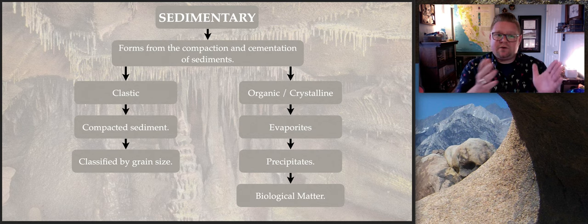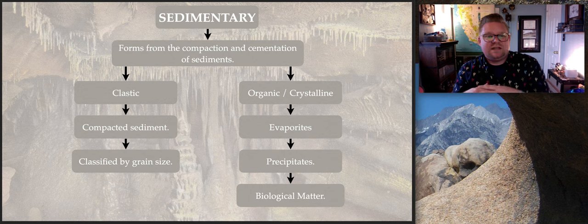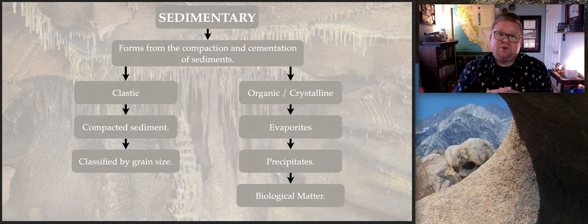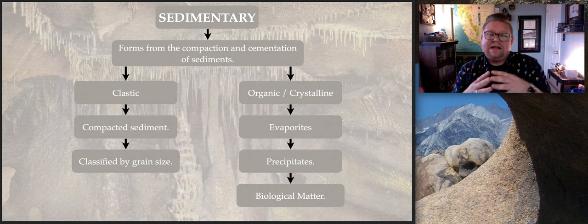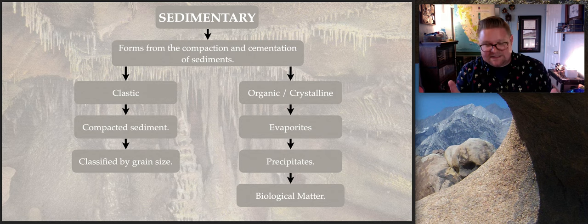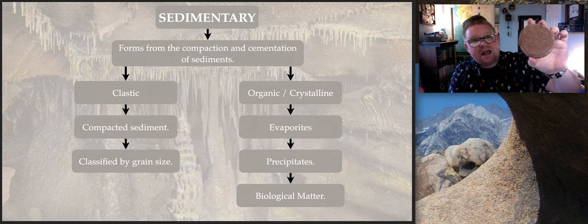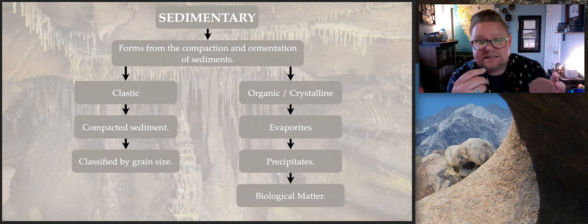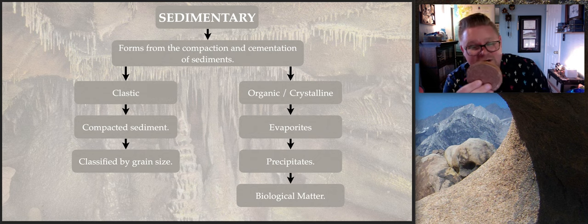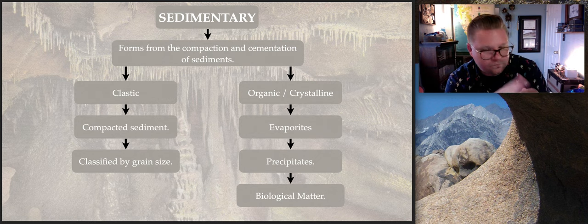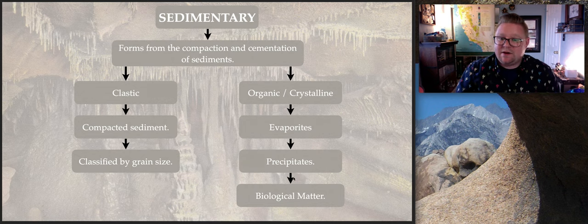Sedimentary rocks form from the compaction and cementation of sediments — cementation, like cement, is known as lithification. We have two groups: clastic, and organic and crystalline. Clastic sedimentary rocks are made of compacted sediment, classified based on grain size. This is a piece of red sandstone from Zion National Park — it's a sandstone because sand implies a grain size. It's coarse grain, cemented or lithified into a rock. Organic and crystalline sedimentary rocks can be evaporites, precipitates, or biological matter.